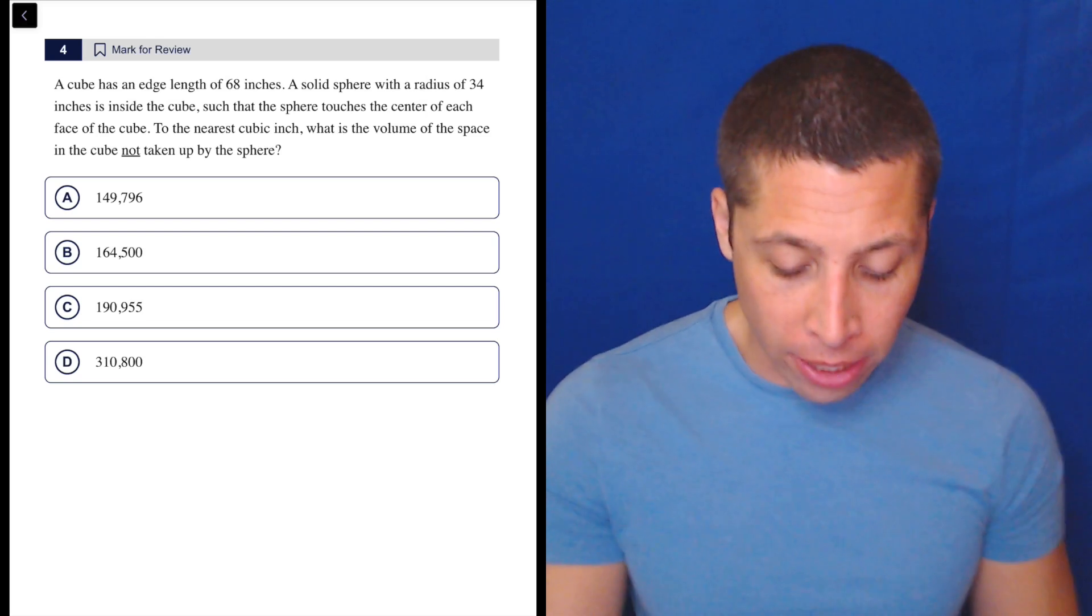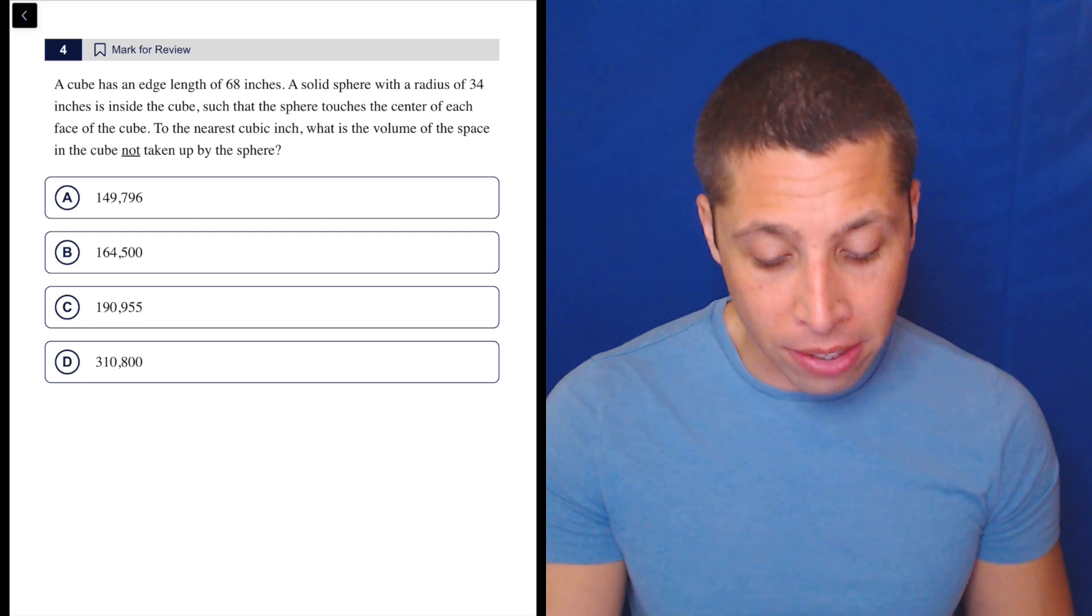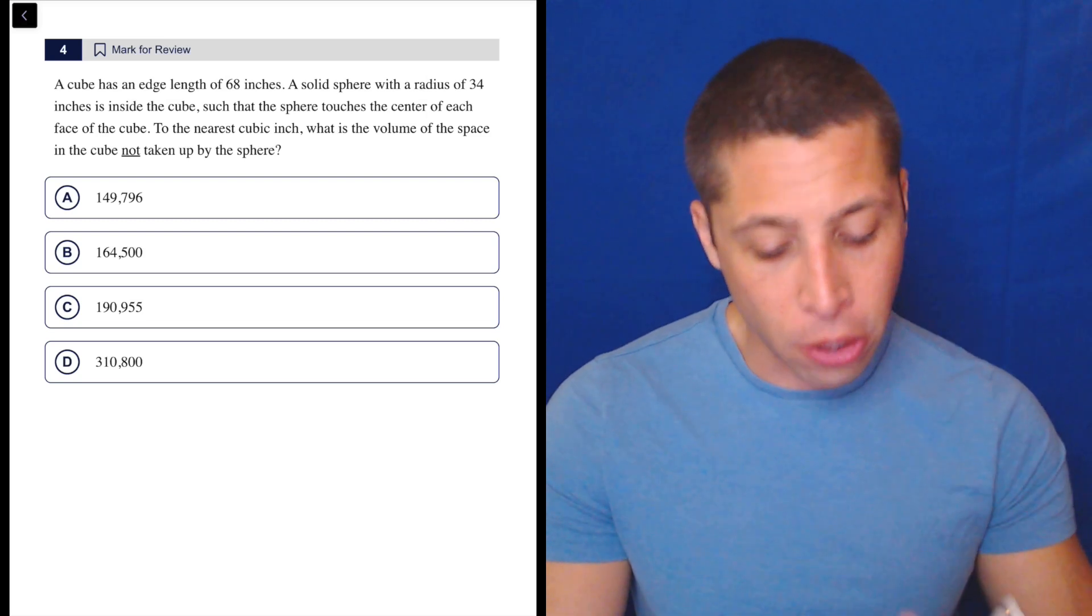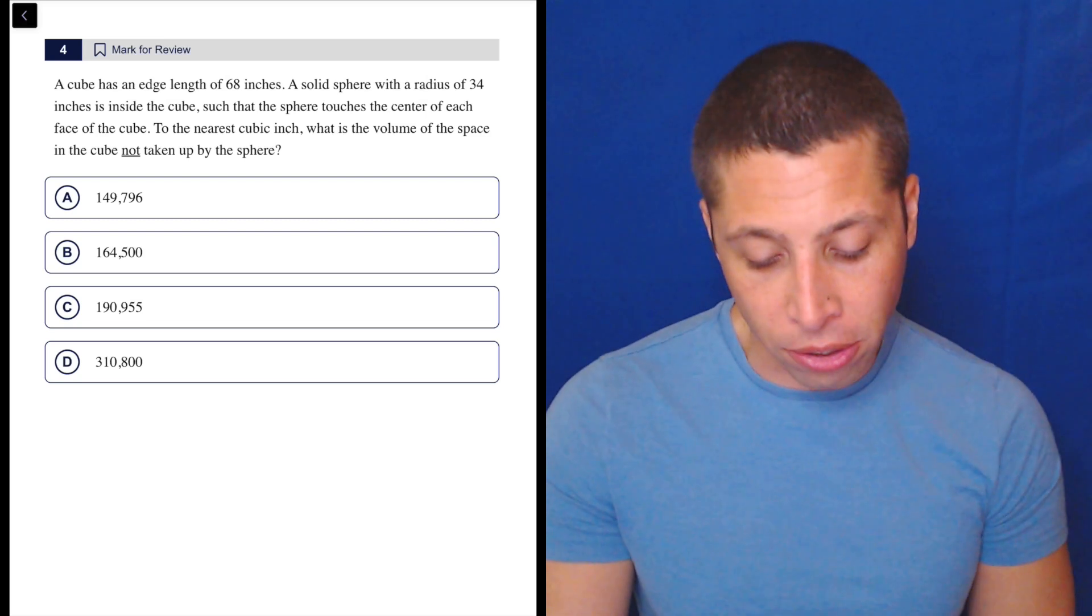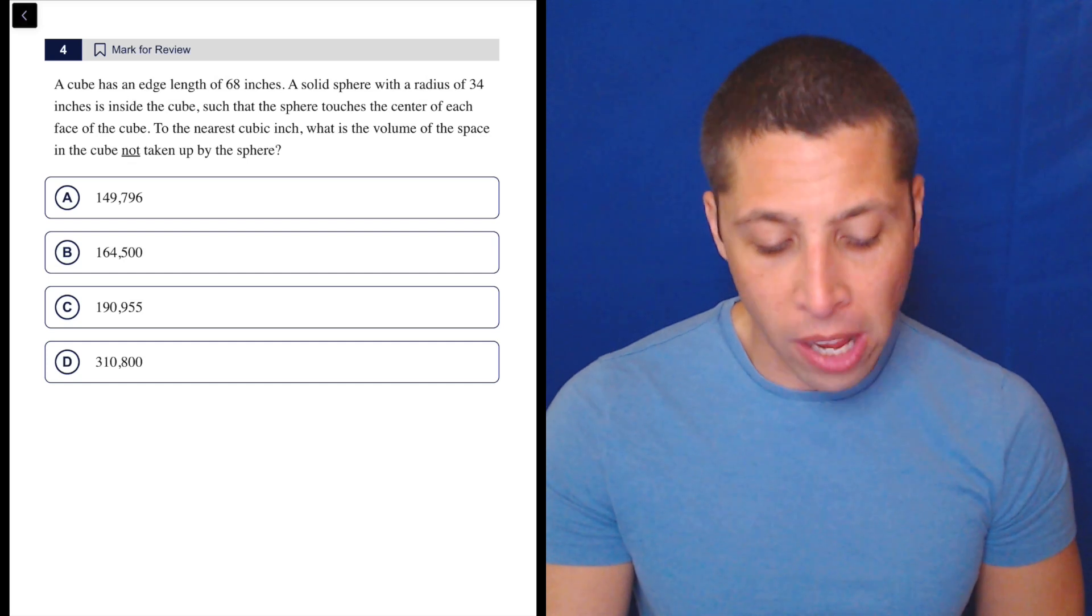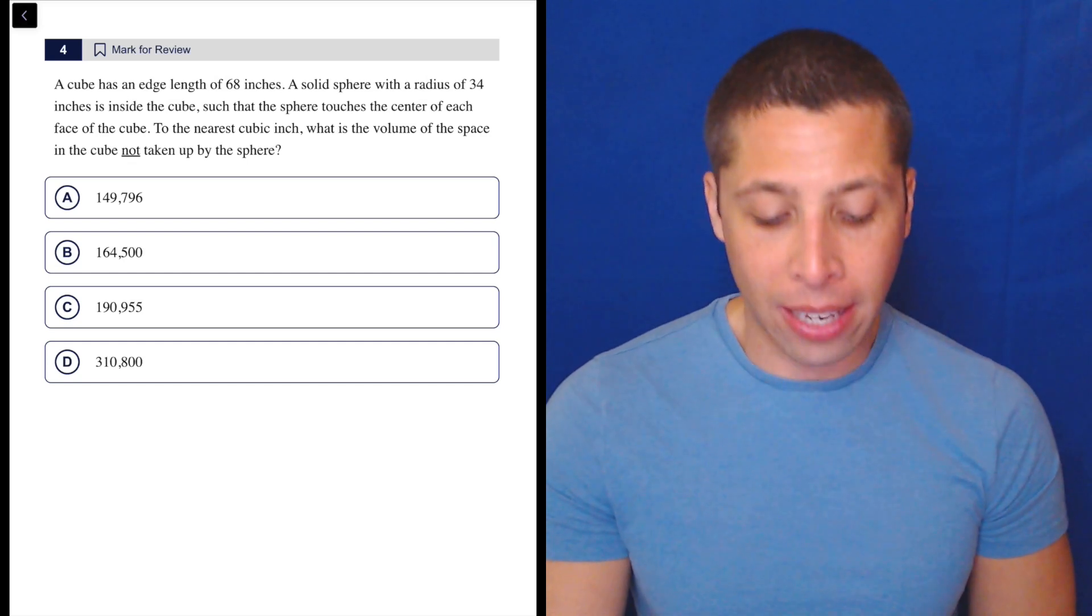But let's take a look, right? A cube has an edge length of 68 inches. A solid sphere with a radius of 34 inches is inside the cube, such that the sphere touches the center of each face of the cube. To the nearest cubic inch, what is the volume of the space in the cube not taken up by the sphere?